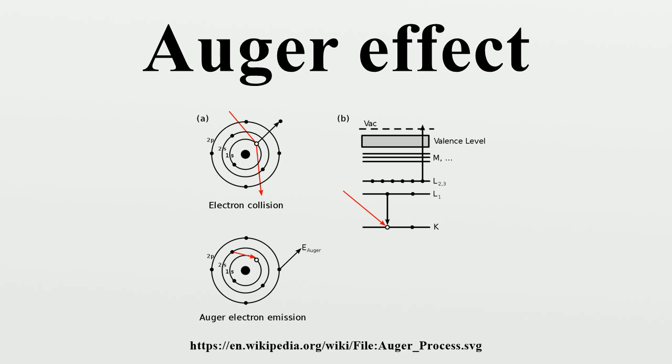The Auger emission process was observed and published in 1922 by Lise Meitner, an Austrian-Swedish physicist, as a side effect in her competitive search for the nuclear beta electrons with the British physicist Charles Drummond Ellis.